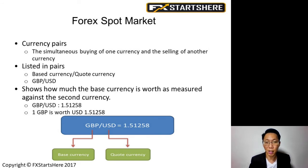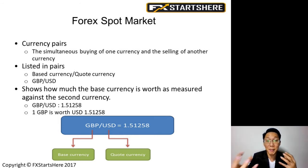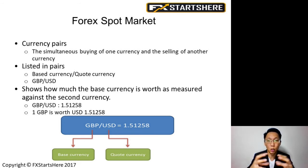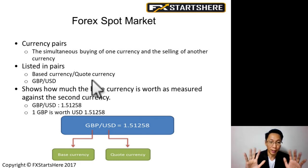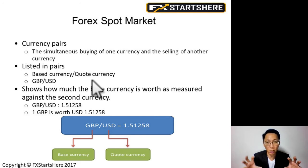Next we talk about currency pairs. When we trade forex, we're buying one currency and selling another currency simultaneously. That's why currencies are grouped into pairs. For example, GBP/USD — GBP is the base currency and USD is the quote currency. The base currency and quote currency terminology is good to know but not critical when trading in the spot market.